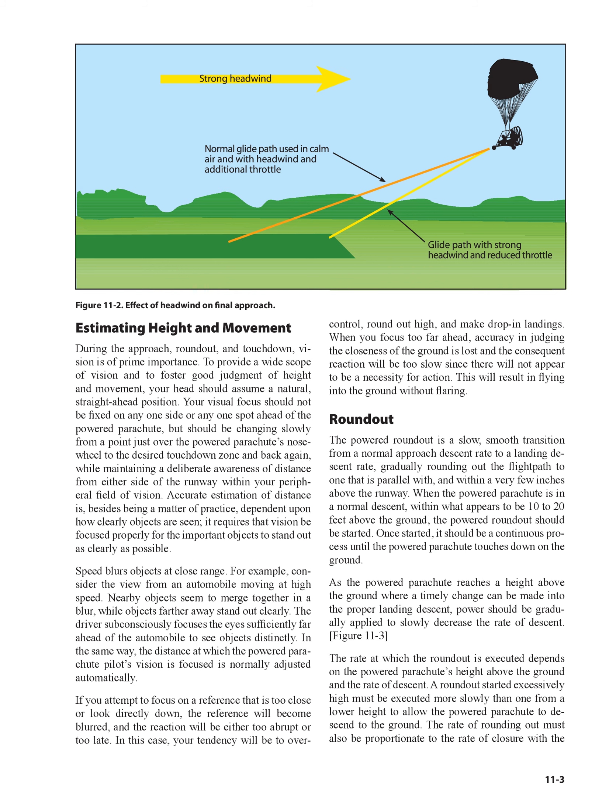In the same way, the distance at which the powered parachute pilot's vision is focused is normally adjusted automatically. If you attempt to focus on a reference that is too close or look directly down, the reference will become blurred, and the reaction will be either too abrupt or too late. Your tendency will be to over-control, round out high, and make drop-in landings. When you focus too far ahead, accuracy in judging the closeness of the ground is lost, resulting in flying into the ground without flaring.